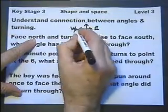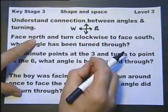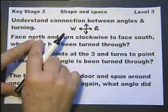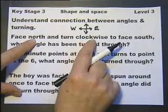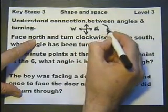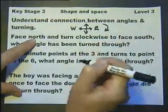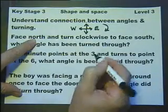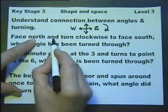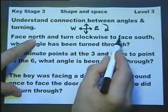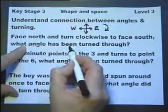So you've got north, south, west and east on the compass. So if I face north and turn clockwise, we also need to know that clockwise is going this way, and anticlockwise must be going the other way. I face north, I turn clockwise to face south, what angle has been turned through?